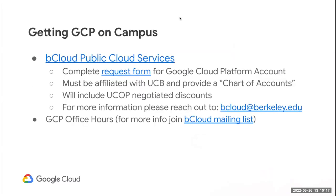Let's talk about some of the programs we have. If you'd like to get GCP on campus, we have a partnership with the bCloud team — their website is listed here. The process is quite simple: fill out a request form for a GCP account, and once provisioned, it'll be tied to your chart of accounts. The one caveat is you must be affiliated with UC Berkeley. Once provisioned, it will include UC Office of the President negotiated discounts. For questions, reach out at bcloud@berkeley.edu — that's B like boy, C-L-O-U-D at berkeley.edu. We also recently kicked off the GCP Office Hours Program with the bCloud team; join their mailing list to learn more.